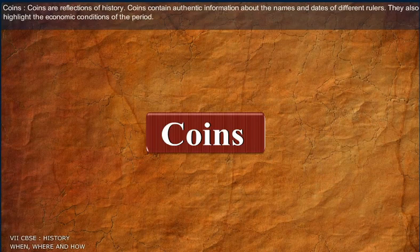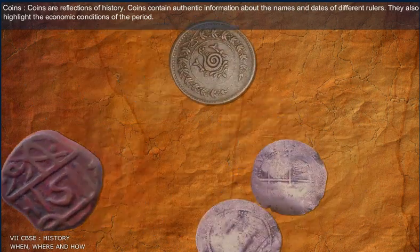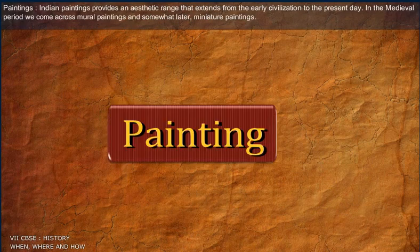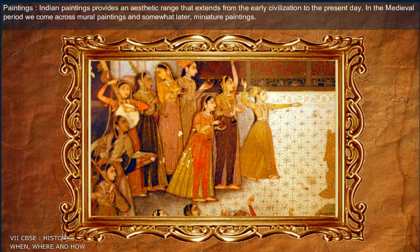Coins are a reflection of history. They contain authentic information about the names and dates of different rulers and also highlight the economic conditions of the period. Indian paintings provide an aesthetic range that extends from the early civilization to the present day. In the medieval period, we come across mural paintings and somewhat later miniature paintings.